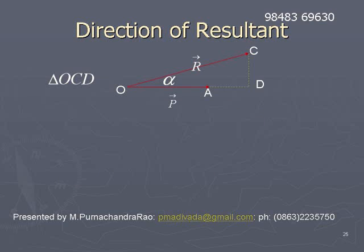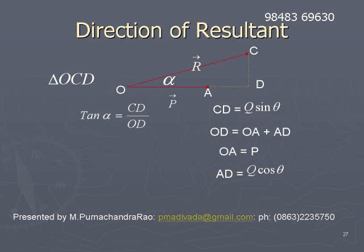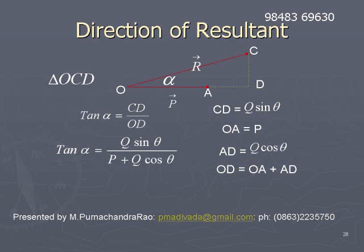Direction of resultant. The direction of the resultant is indicated by the angle alpha — the angle between R-bar and P-bar. From the right-angle triangle OCD, tan(alpha) = CD / OD. Since CD = Q·sin(theta) and OD = OA + AD = P + Q·cos(theta), we get tan(alpha) = Q·sin(theta) / (P + Q·cos(theta)). From this relation, we can find the angle alpha, which gives the direction of R-bar.